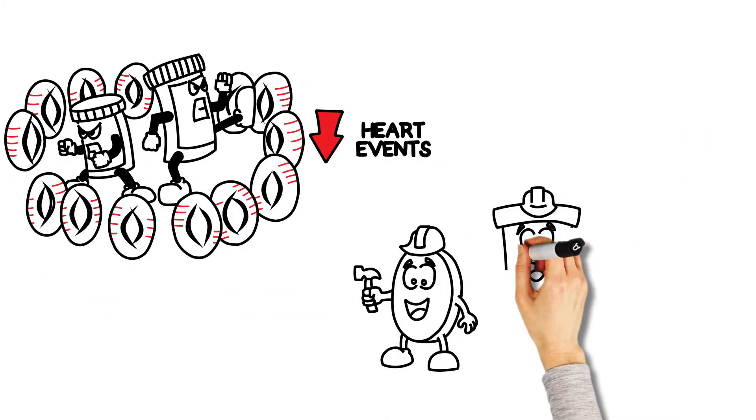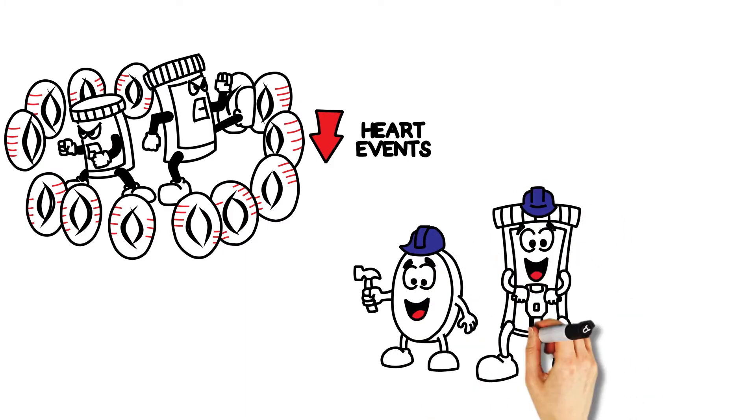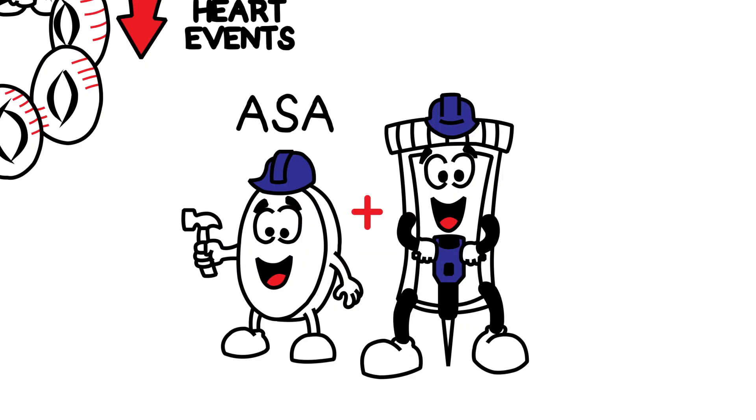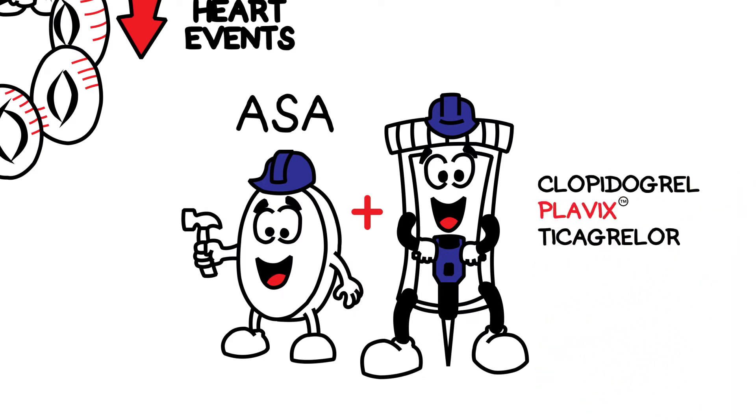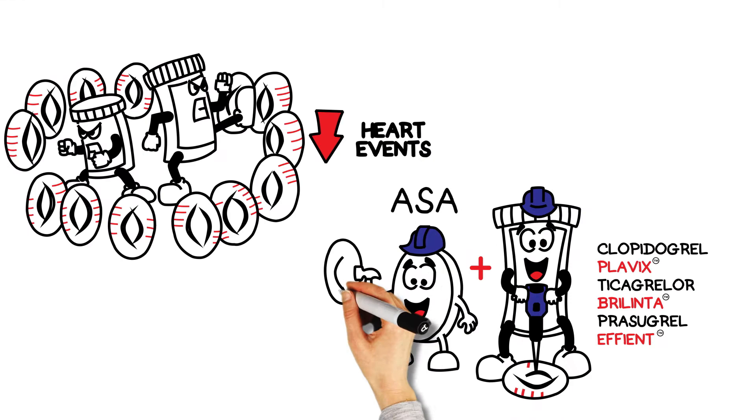Typically, two antiplatelet medications are used in combination. These are ASA or aspirin, and one of Clopidogrel, also called Plavix, Ticagrelor, also known as Brilinta, and Prasugrel, also known as Effient. Each works on a slightly different part of the platelet with additive benefit.